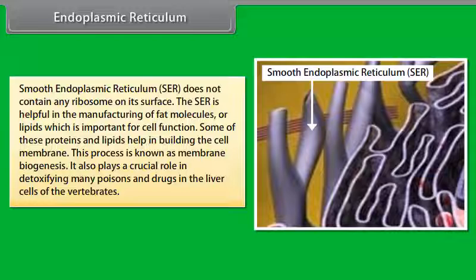Some of these proteins and lipids help in building the cell membrane. This process is known as membrane biogenesis. It also plays a crucial role in detoxifying many poisons and drugs in the liver cells of vertebrates.